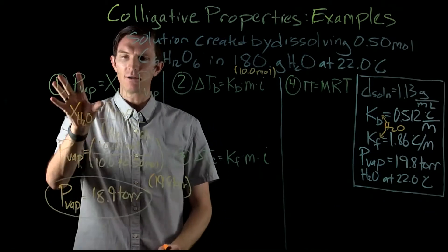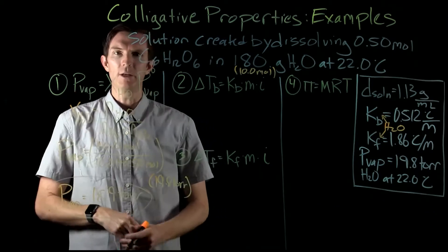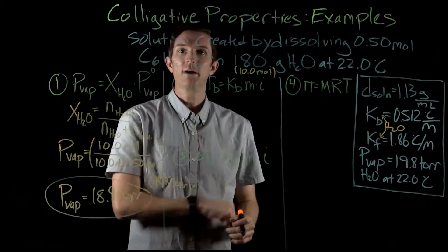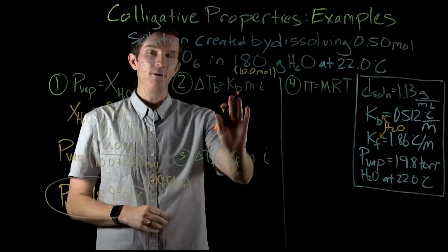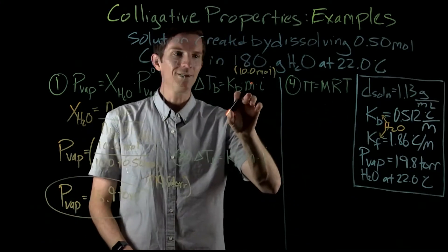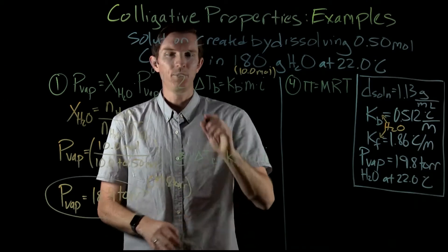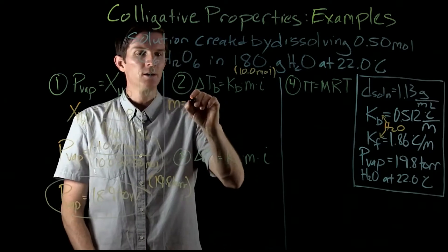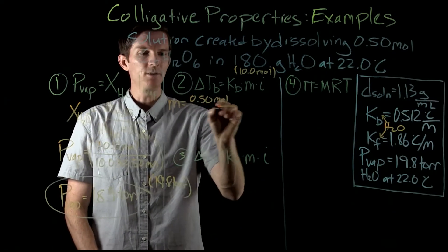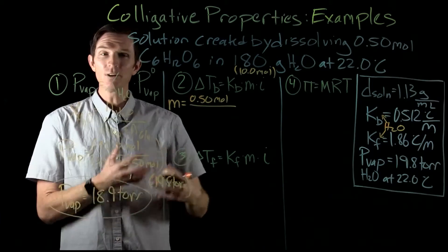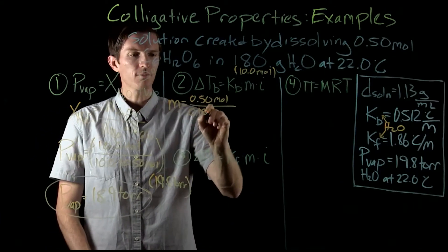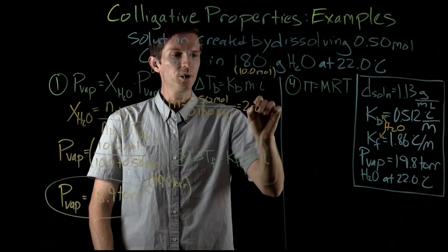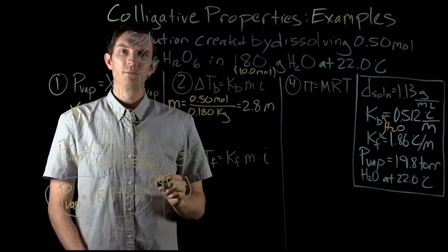So we get a vapor pressure of 18.9 Torr — lower than the pure water value of 19.8 Torr at the same temperature, because some surface space is occupied by the glucose. That lower vapor pressure leads to a higher boiling point. To calculate the change in boiling point, I need the Kb value, the molality, and the van't Hoff factor. Molality is moles of solute divided by kilograms of solvent: 0.5 moles divided by 0.18 kilograms gives a concentration of 2.8 molal.